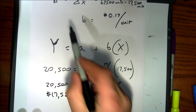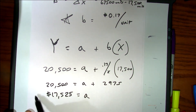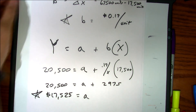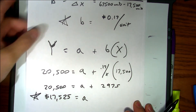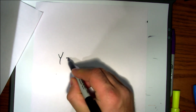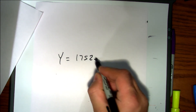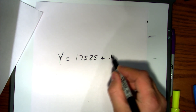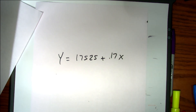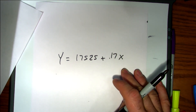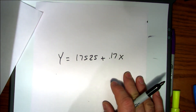We now have our B and our A. Let me show you how I don't want you to write this answer. Some students will write: y equals 17,525 plus 0.17x. Well, yeah, sort of — but let's go ahead and define these variables for this specific situation.